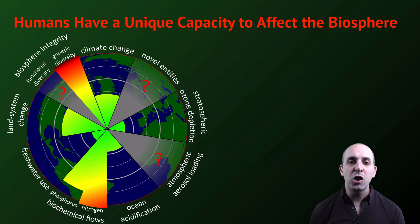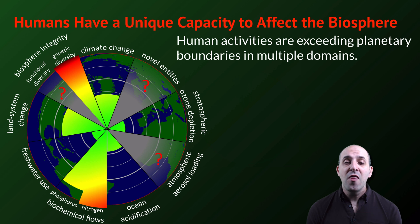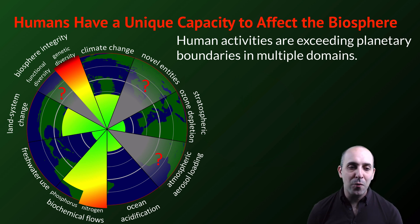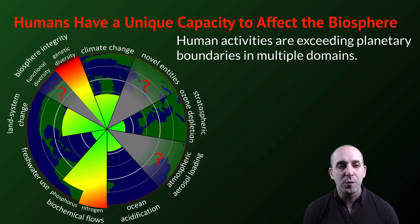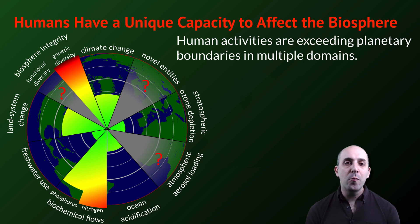This hasn't been a problem for humans until the human population increased to the level where we could affect the planetary biosphere. Since the Industrial Revolution, the human population has developed a unique capacity to affect the biosphere, to the point that our activities on the planet are exceeding planetary boundaries in multiple domains. This graph shows the major areas in which human activities can affect the biosphere and the different extents of those activities. In some domains, like freshwater use, ozone depletion, or even climate change, our effect has not exceeded the planetary boundary by which those systems could recover. In other domains, our activities have already had an irreversibly negative effect on the systems of the planet.